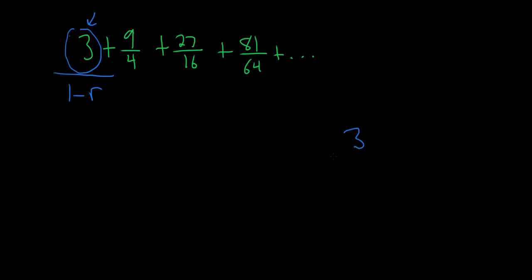Let's go ahead and do that. We have 3 over 1 minus, and now we just have to find r. So to find r, the trick is you take any of the terms and then divide by the previous. So let's just take this one and divide by the previous. So we do 9 over 4 divided by 3.